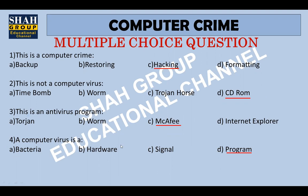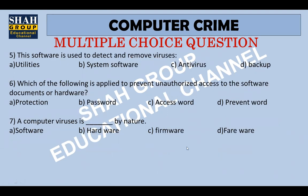Number five: this software is used to detect and remove viruses. The software which detects and removes viruses is called antivirus. Number six: which of the following is applied to prevent unauthorized access to software, documents, or hardware?